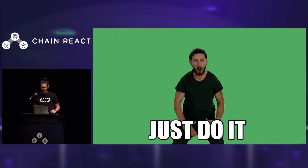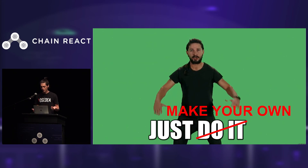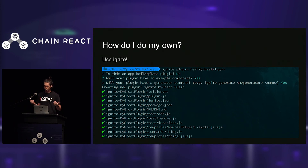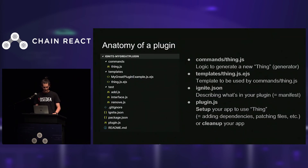I just want to say it again: just do it. And if you don't like the ones that are out there, just make your own, because it's really easy with Ignite to make your own plugins. How do you do your own plugin? Well, just use Ignite. Ignite has a plugin command, and with 'ignite plugin new' it's going to ask you a few questions and generate you a bunch of code. That's mind-blowing, right? So let's look a little bit at the anatomy of a plugin.